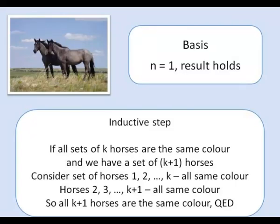And so if you look at horse k+1, it's the same colour as horse k from the second set and then all the other horses are the same colour. So we've proved the result that all horses in a set of k+1 are the same colour.